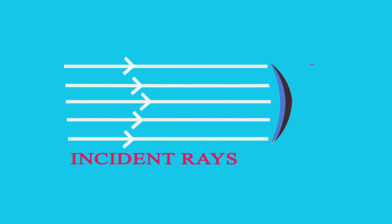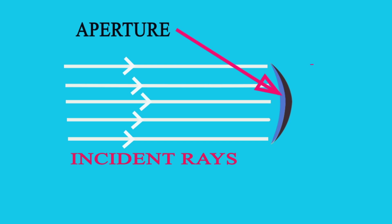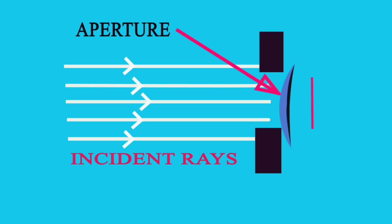Now let us take a concave mirror and consider light rays falling on it — these are simply incident rays. The area where incident rays fall on the concave mirror is called the aperture; it is basically the height of the mirror. This applies to a convex mirror as well — the height of the mirror is the aperture. If we block the area where light is falling on the spherical mirror, the area reduces, and so the aperture will reduce.